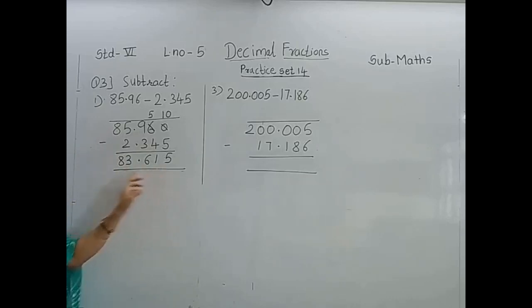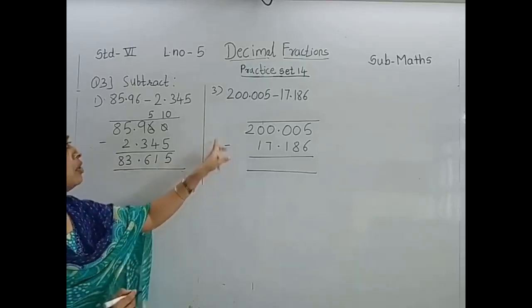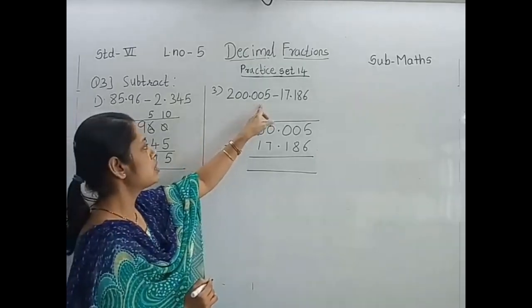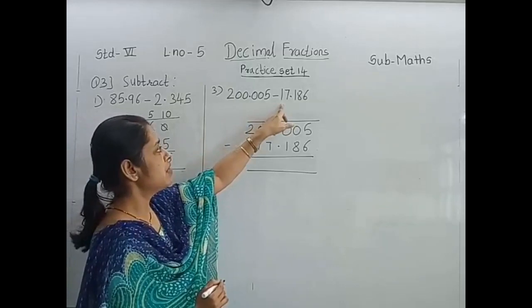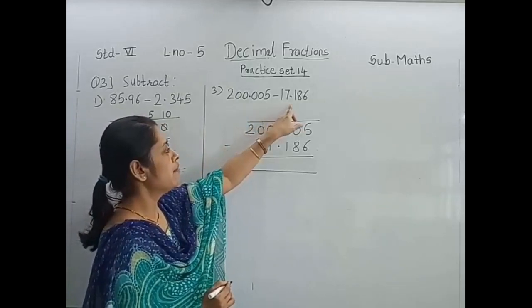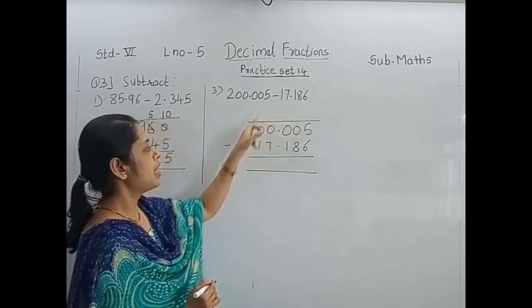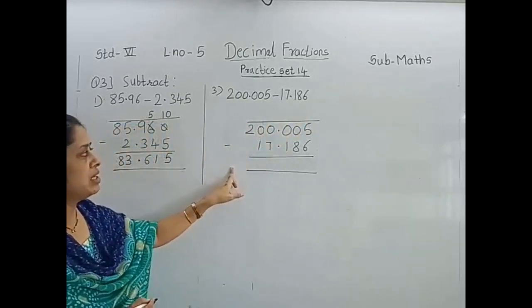The second sum you have to solve on your own. Now we will solve the third example: 200.005 minus 17.186. Arrange the numbers properly.